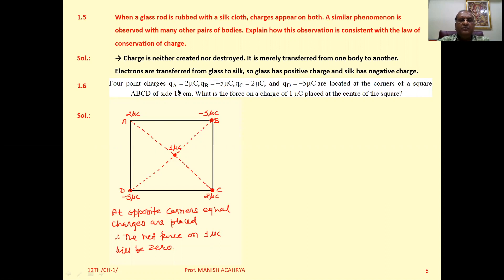Four point charges - qa equal to 2 microcoulombs, qb equal to minus 5 microcoulombs, qc and qd - are located at the corners of square ABCD of side 10 centimeters. What is the force on a charge of one microcoulomb placed at the center of the square? Now suppose we represent all these charges at